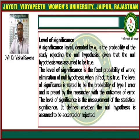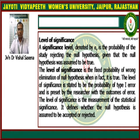Now we will discuss these topics with mathematical concepts and figures using some slides. The first slide covers the level of significance, which is written by alpha (α). It represents the probability of the study rejecting the null hypothesis given that the null hypothesis was assumed to be true.